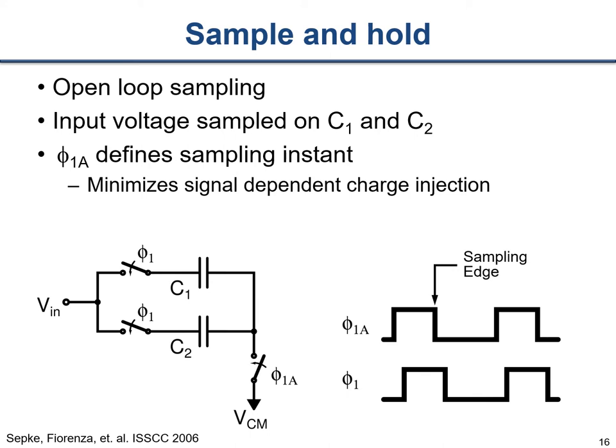Let's look at a circuit that does sample-and-hold operation. One possible way is open-loop sampling. The idea is to sample the voltage onto a capacitor - drawn here as two capacitors C1 and C2 operating in parallel. A capacitor is a great place to do voltage sampling: you have the two switches enabled, sampling the input voltage onto this capacitor. When you open the switches, your input voltage is sampled onto the capacitor and you can use it as a discrete-time element.